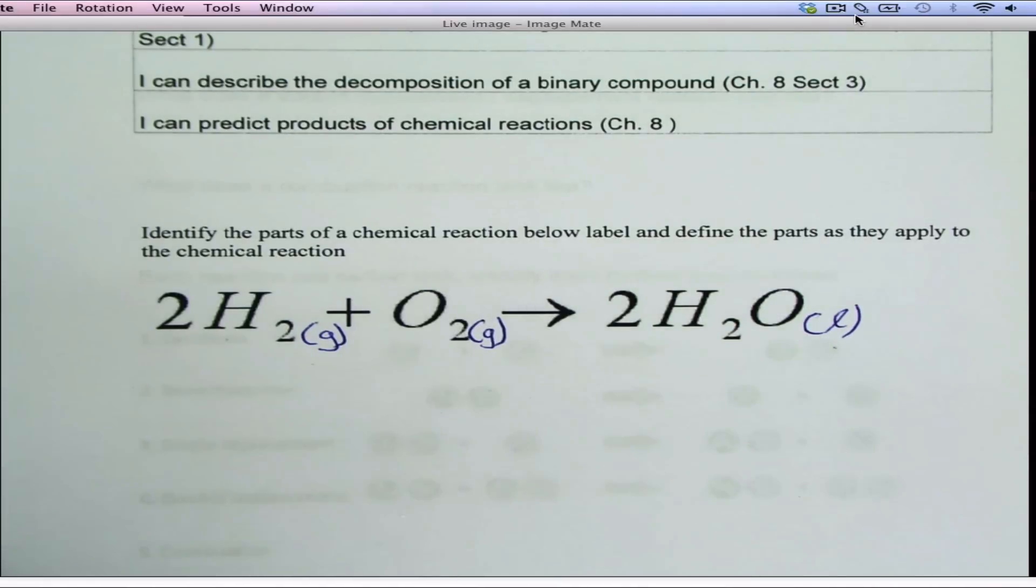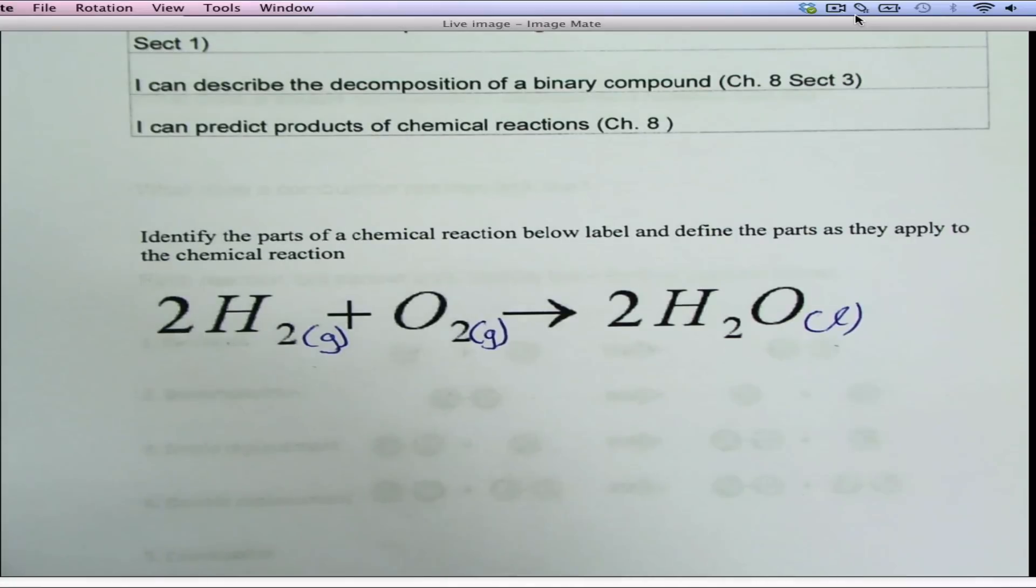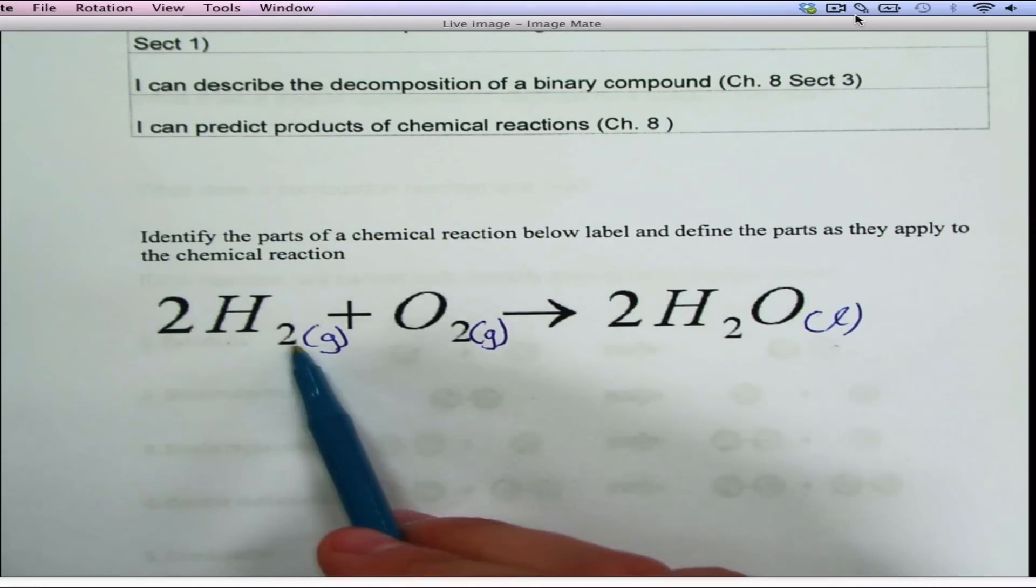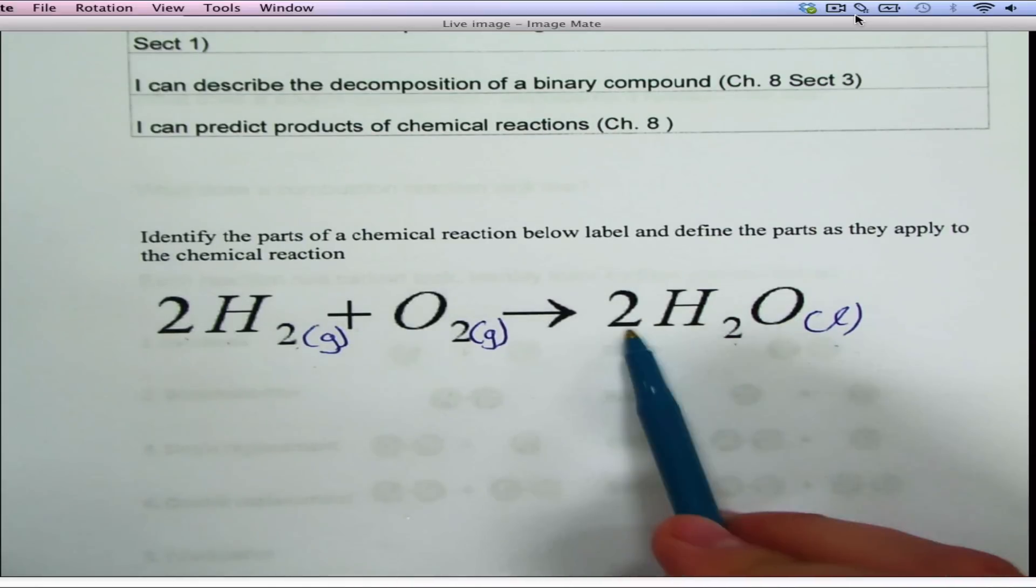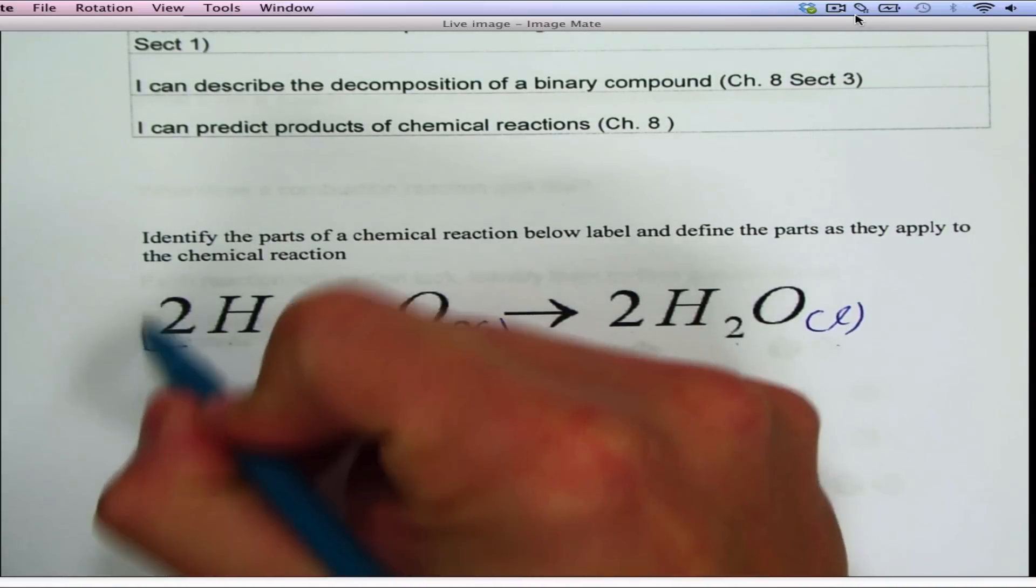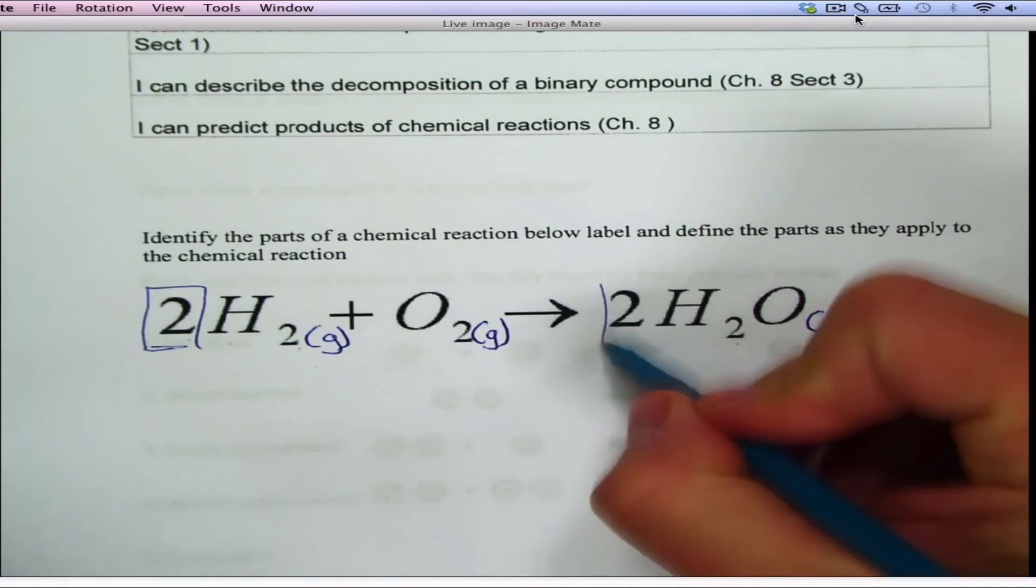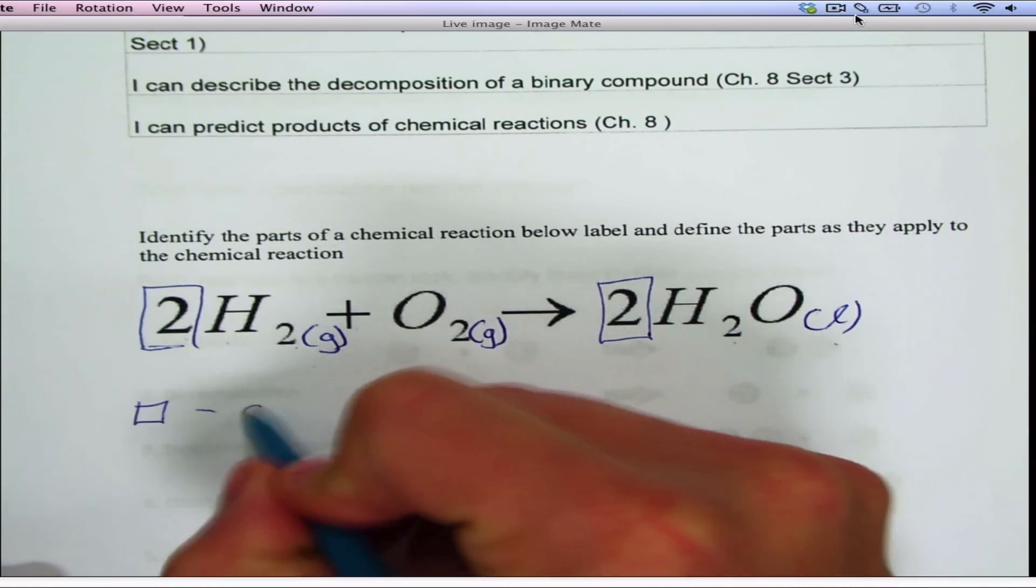On these parts of the chemical reaction, they have different components. You see a plus sign, you see an arrow, you see subscripts, you see coefficients, and they all tell you something different. So these numbers in front, this number and this number, those are called coefficients.